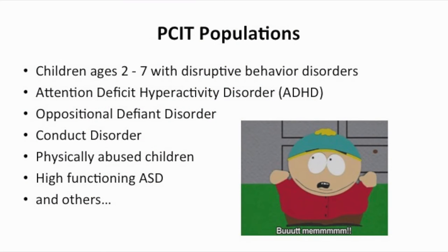PCIT populations are typically children around the ages of 2–7 with disruptive behavior disorders. Disorders that usually include ADHD, oppositional defiant disorder, conduct disorder, children who are physically abused, high-functioning autism spectrum disorder, and several others.